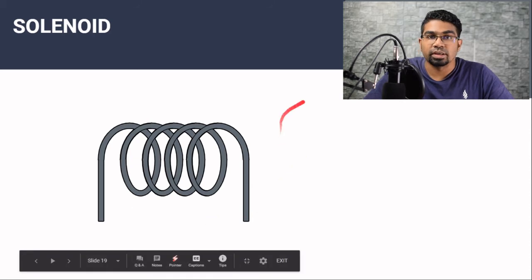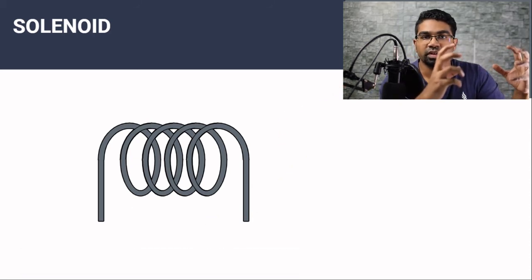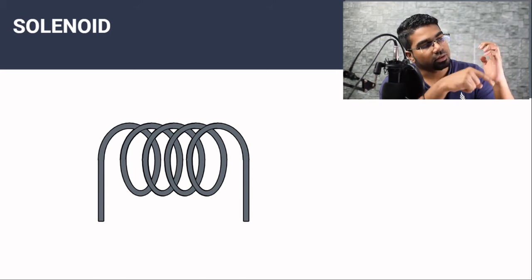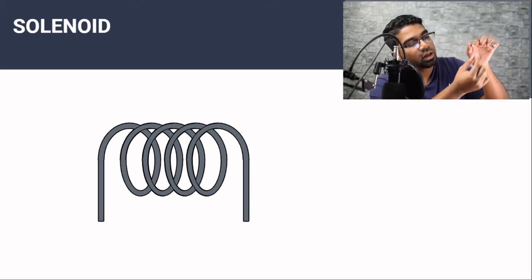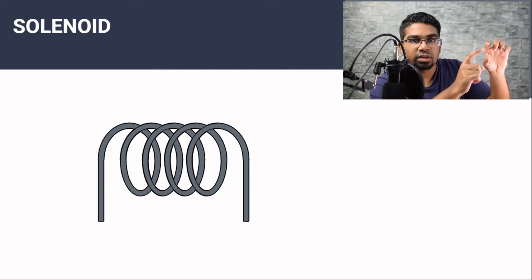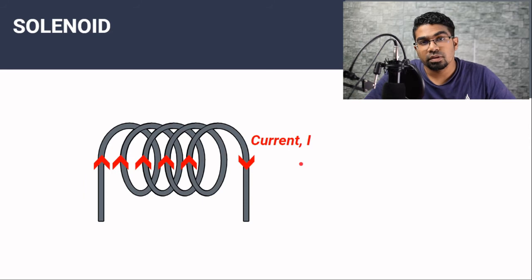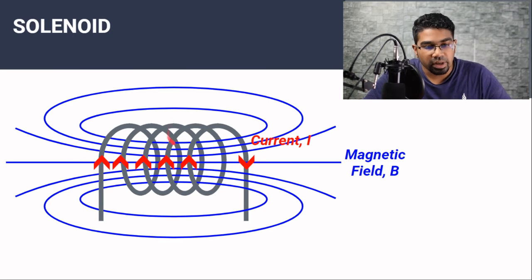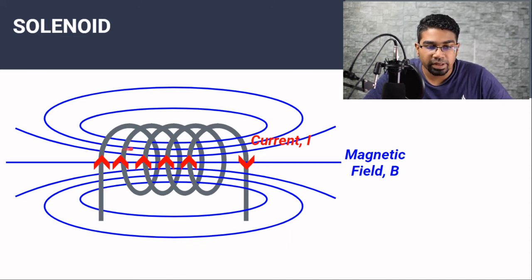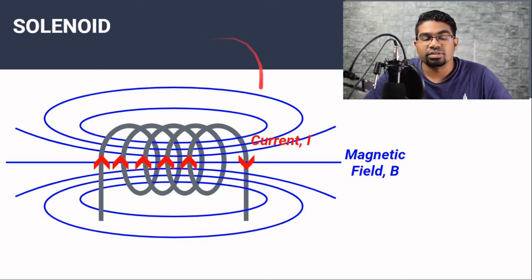This is how a solenoid looks like. When we compare between a solenoid and a coil: a coil is where all the turns are concentrated in a single region, so there is no length — the coil is all in one place. Whereas for a solenoid, it is spread out. When current is flowing through the solenoid, a magnetic field will be generated around it. The magnetic field for a solenoid looks like this — the field lines are evenly spaced and very close together inside, so the magnetic field inside the solenoid is very strong. Whereas outside, the field is more spread out and uneven, so the magnetic field strength is weaker outside.